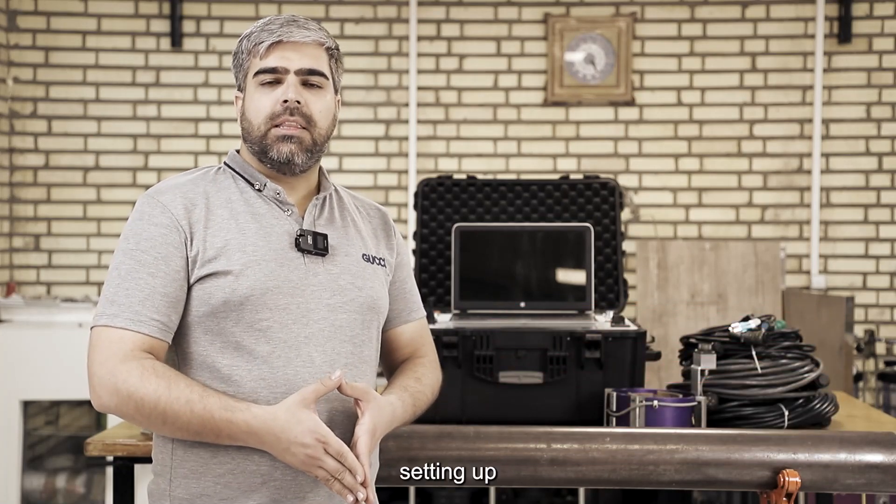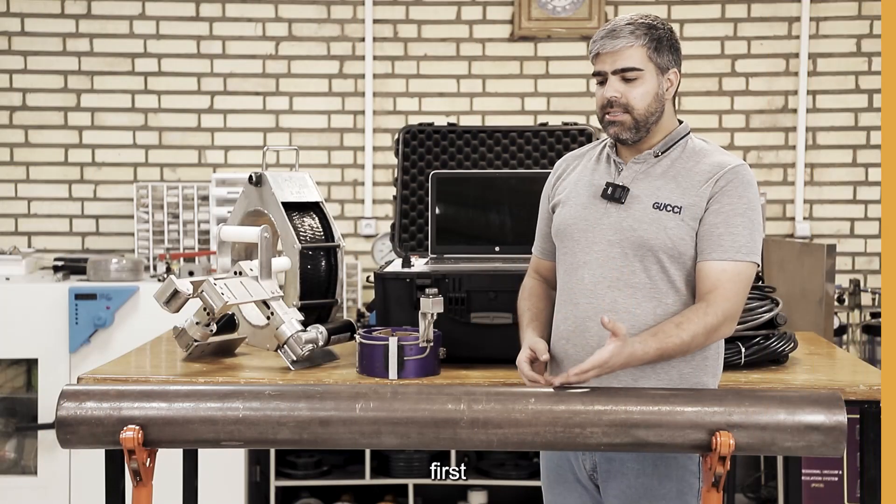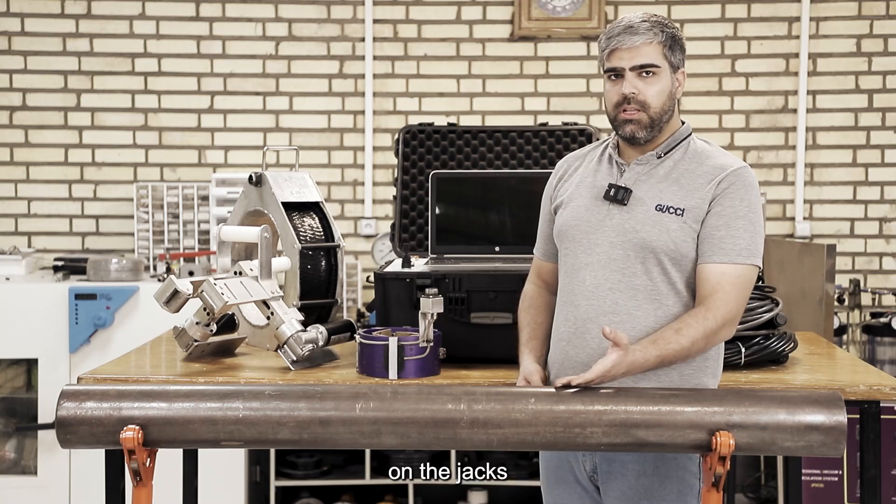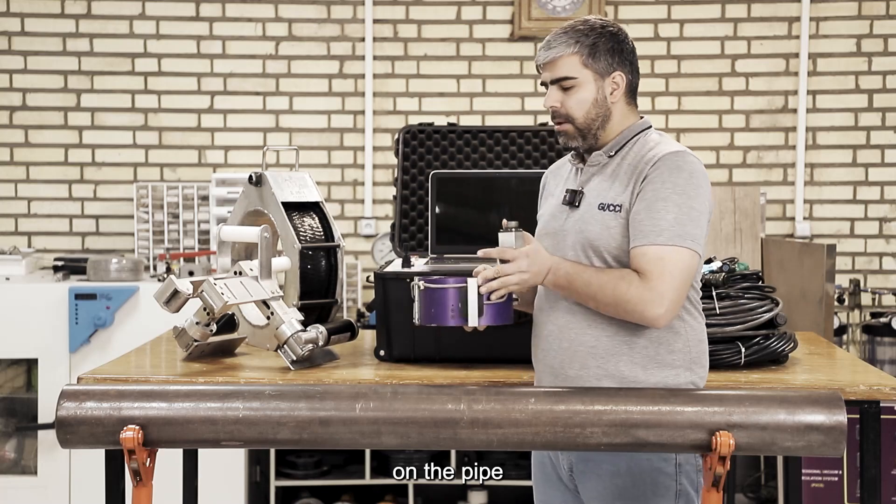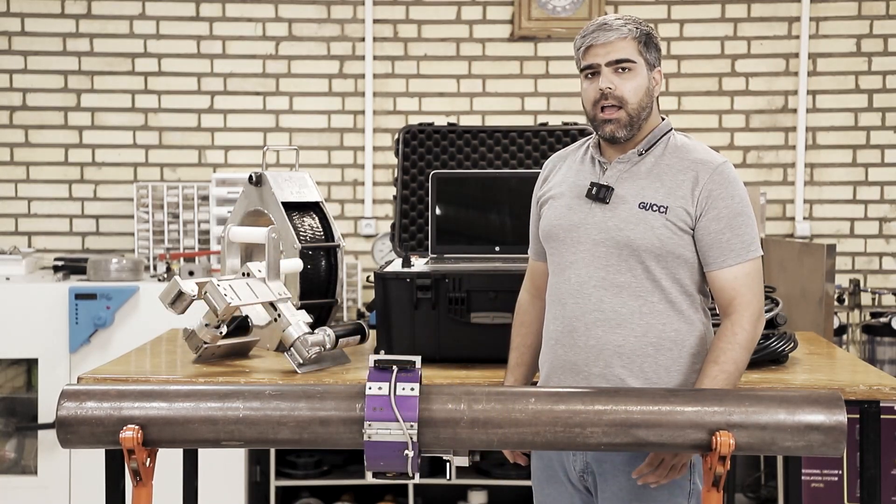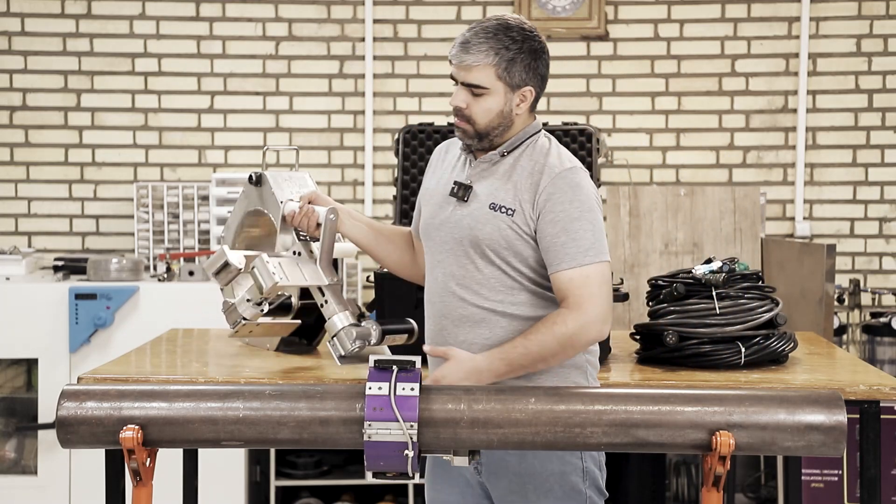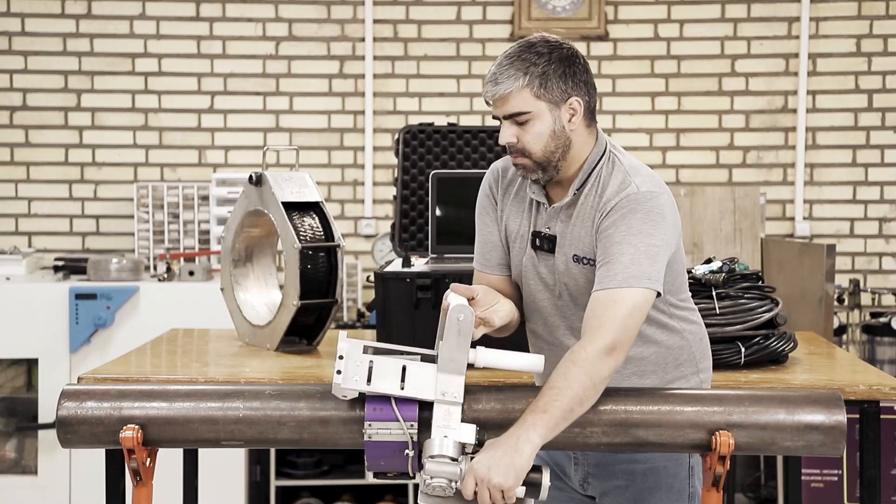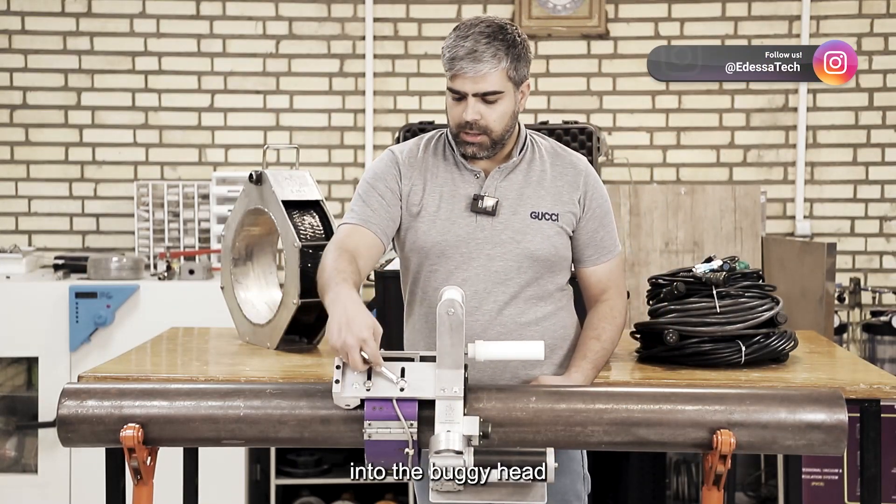The first step in setting up an EMI unit is assembling the mechanical parts. So first, I place the sample pipe on the jacks, and now I mount the buggy head on the pipe. And now I place the buggy on the buggy head and tighten the screws into the head buggy.